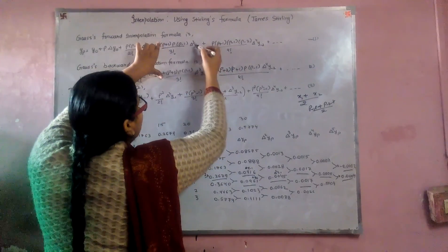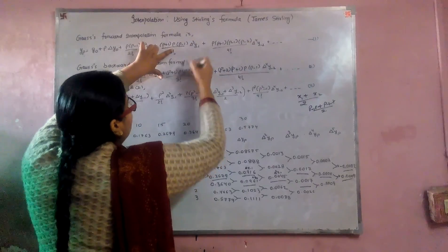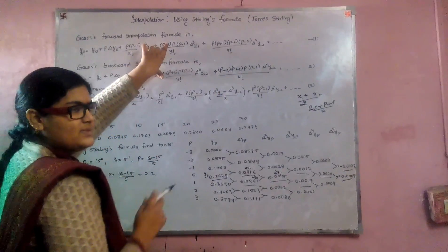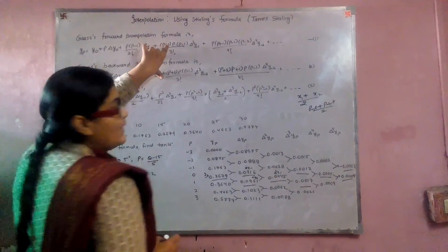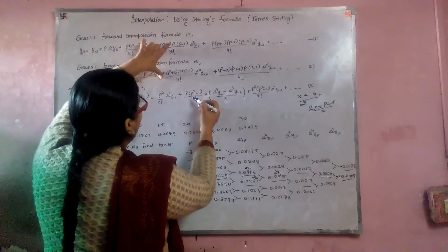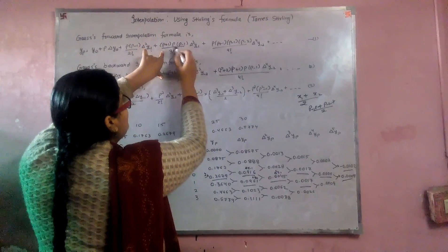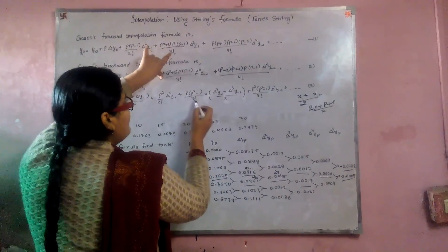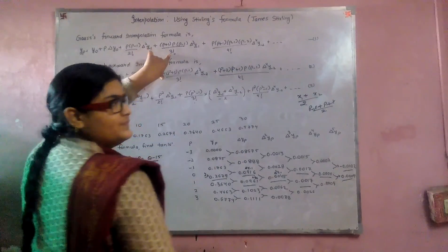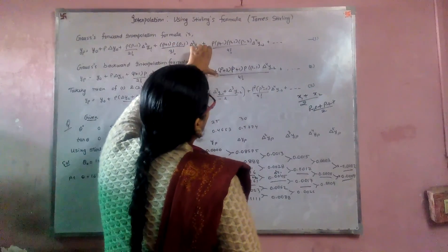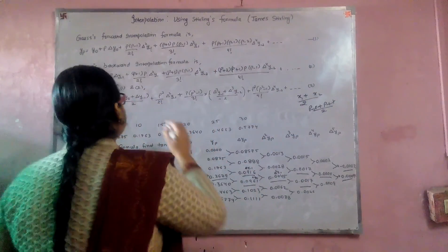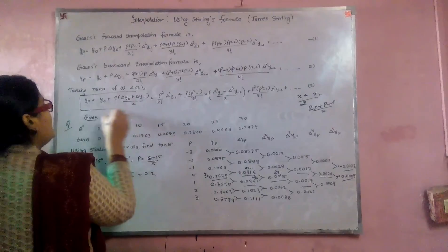Taking the common factor, we have p, (p-1), and (p+1). Dividing by 2, we cancel the 2s and apply the (a+b)(a-b) identity to get p²-1, then p/3! term. The mean of these two values gives us Stirling's formula.